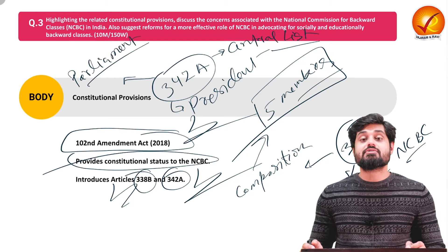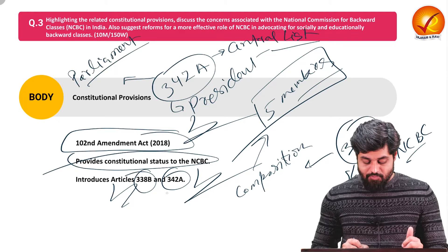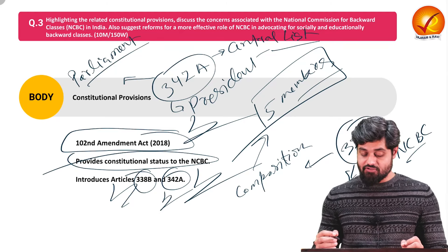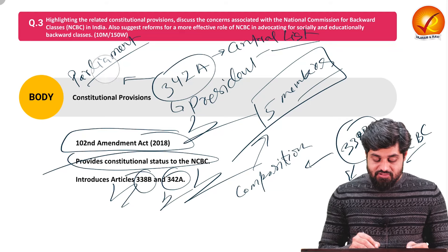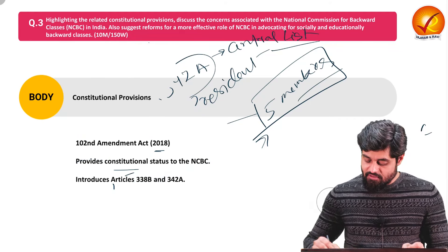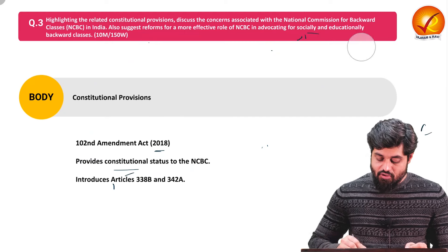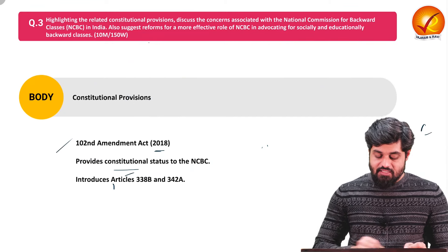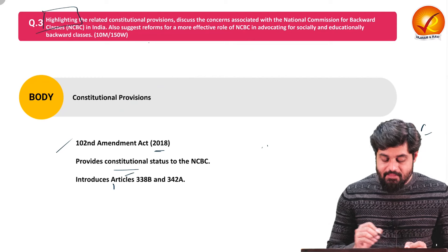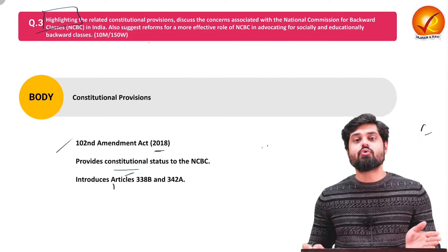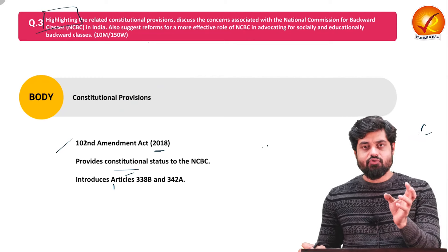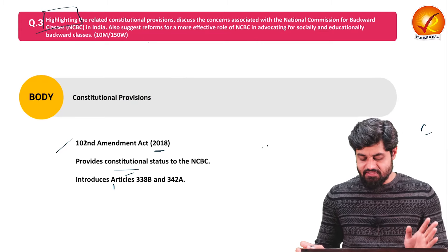Article 342A also provides that any amendment — addition and deletion — to the central list can be done by Parliament. These are the two key constitutional provisions to highlight as the question asks to 'highlight' rather than analyze in depth.